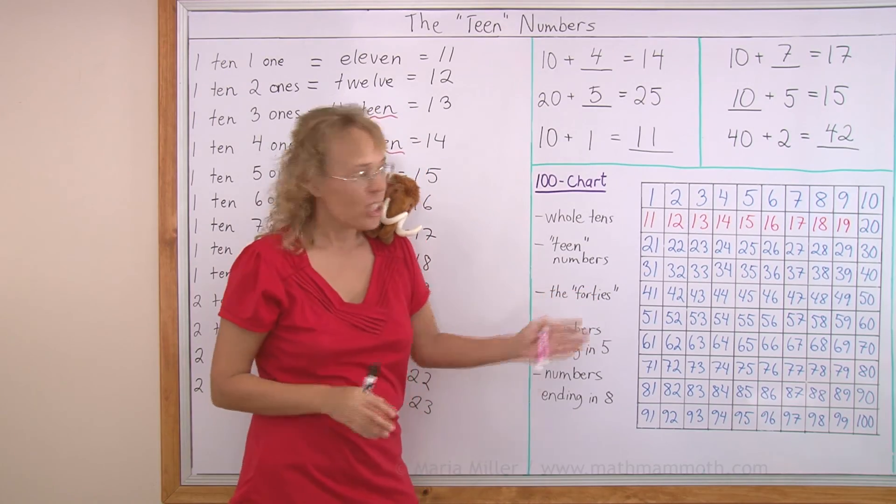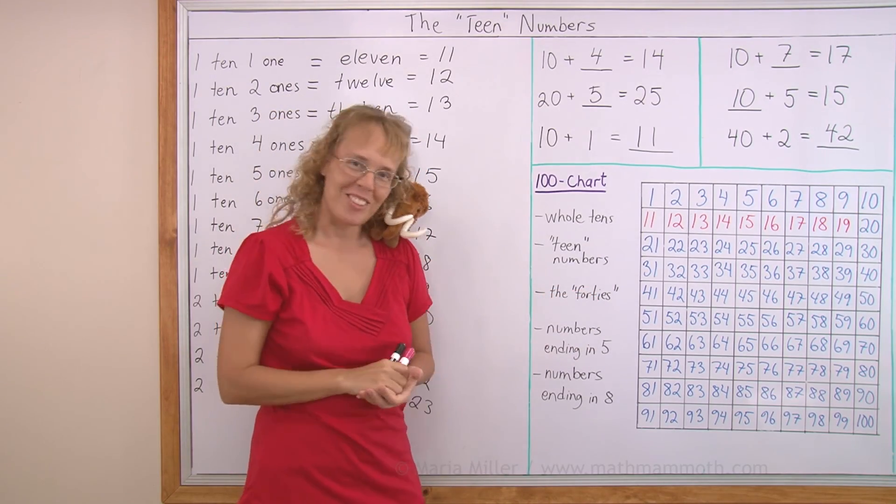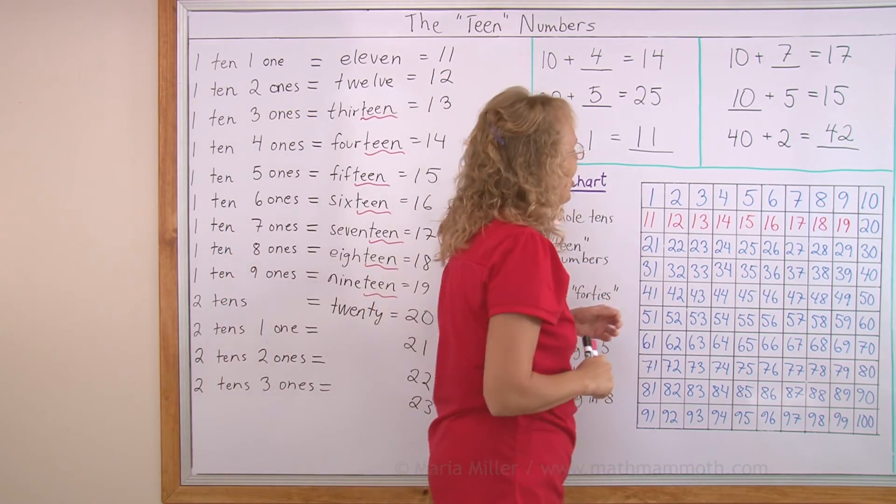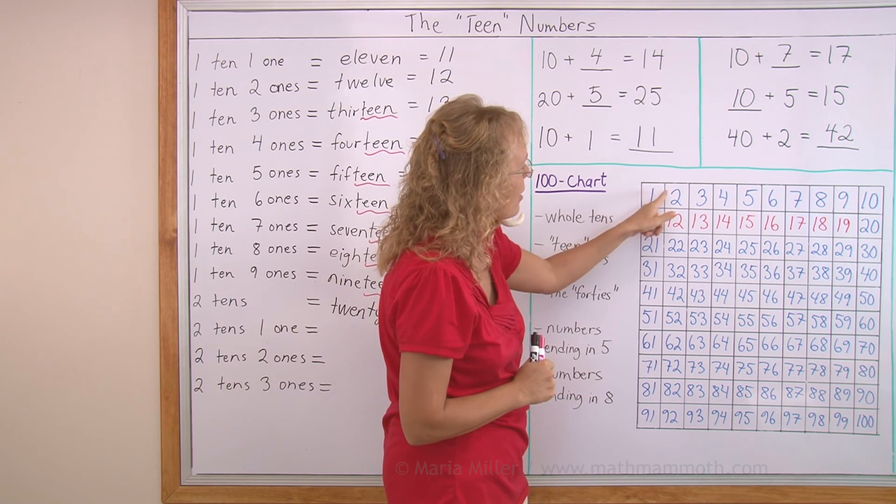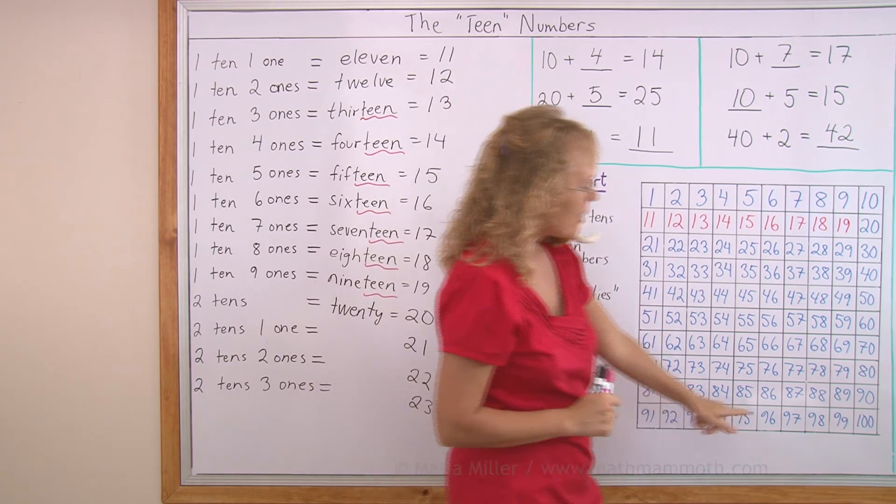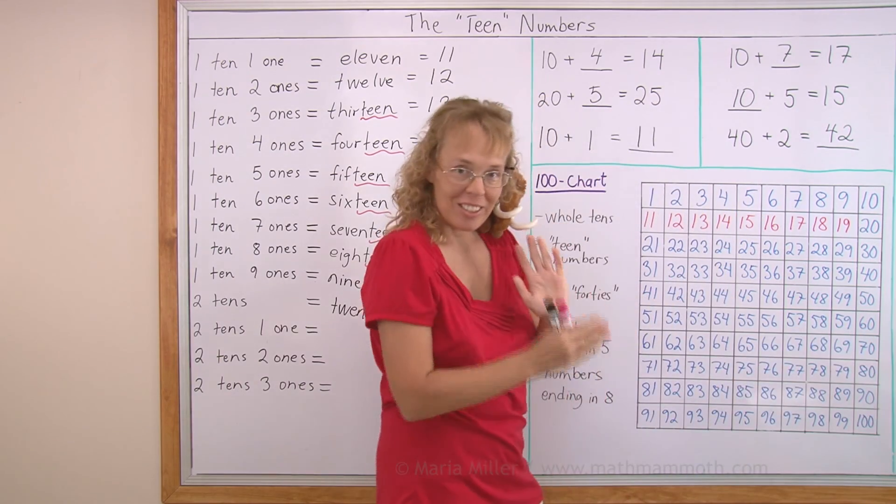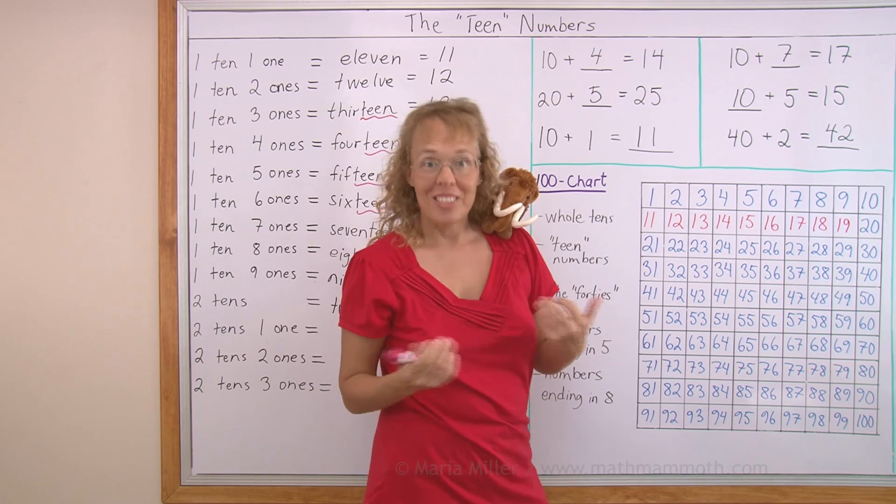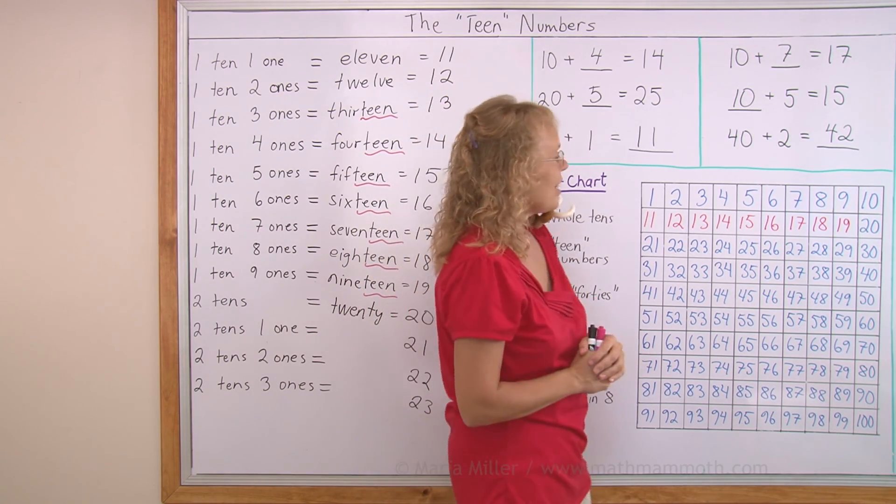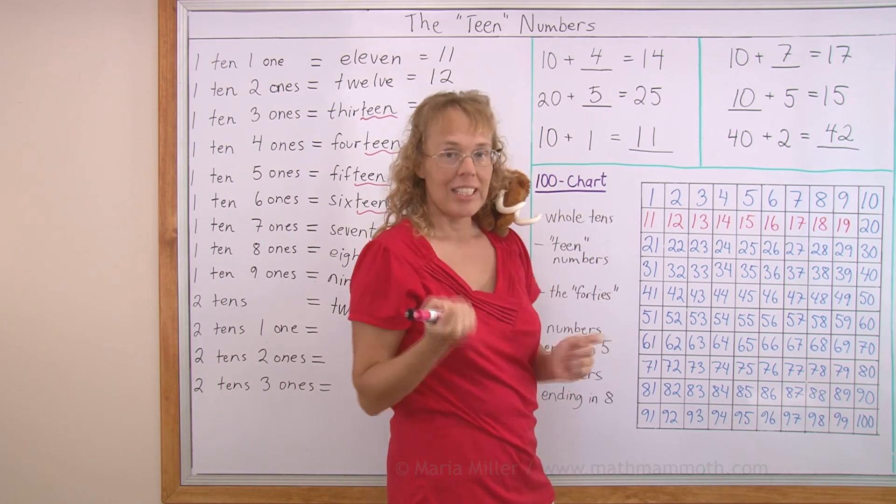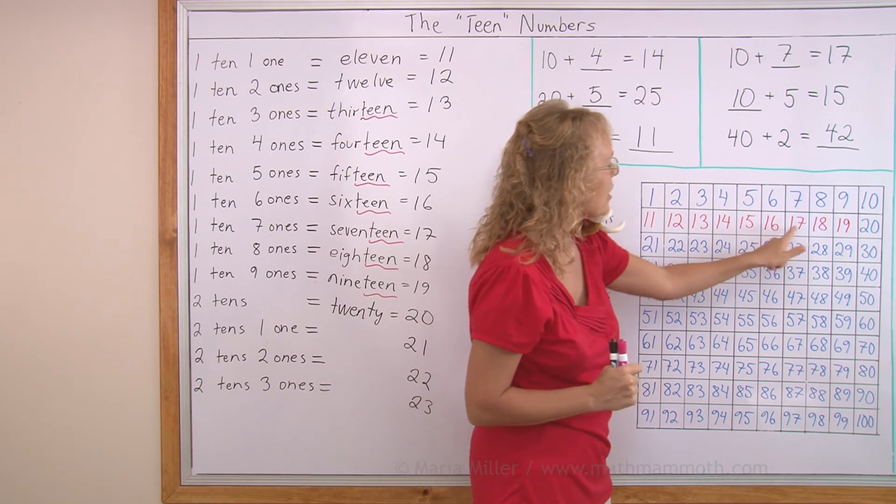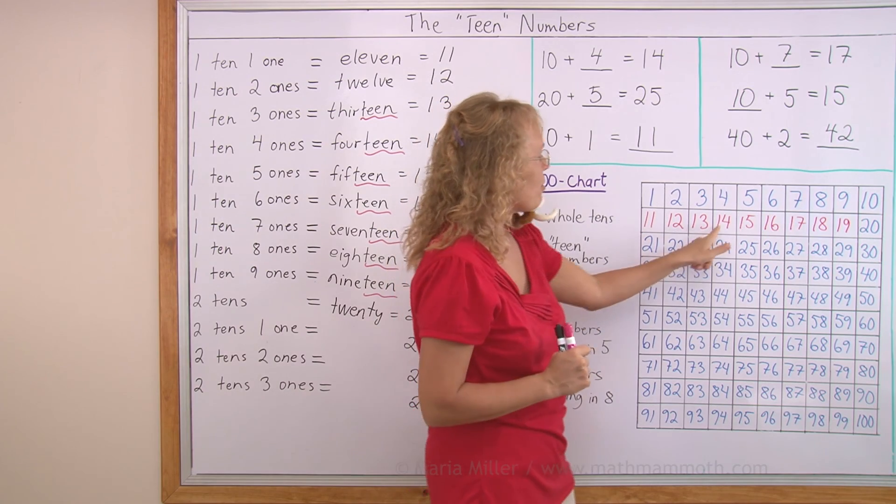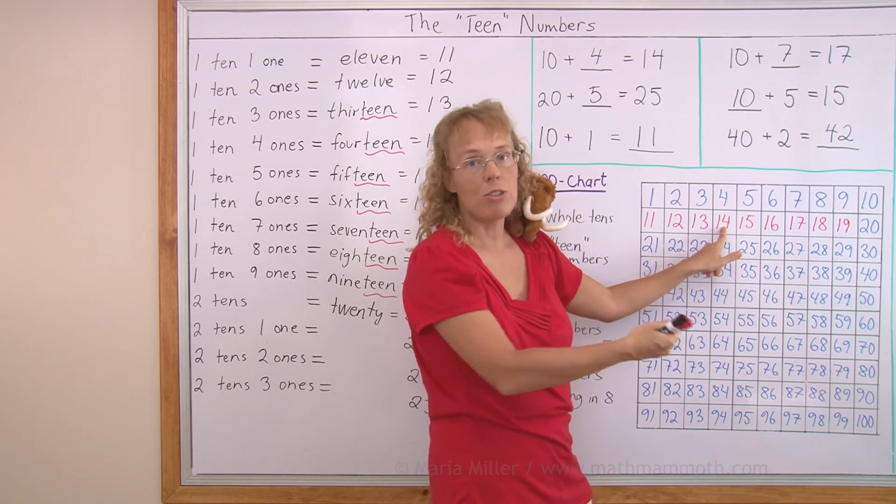42. Here I have a 100 chart, and it took me a while to draw. So let's look at it now carefully. It starts with number 1 here: 1, 2, 3, 4 and so on. It ends in 100, so there's actually 100 squares on it, or 100 numbers. And our difficult numbers that we're studying today are here in red: 11, 12, 13, 14, 15, 16, 17, 18, 19.